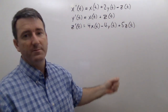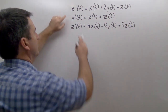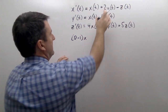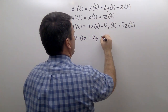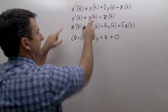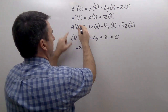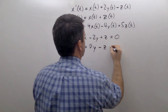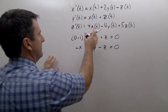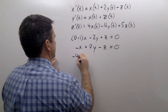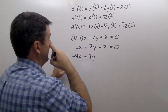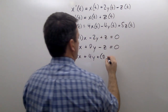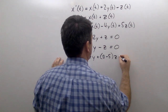The first thing to do is to put these equations into operator form. So the derivative of x minus x gives us (D minus 1) times x minus 2y plus z equals 0. The second equation gives negative x plus (D)y minus z equals 0. And the third gives negative 4x plus 4y plus (D minus 5)z equals 0.